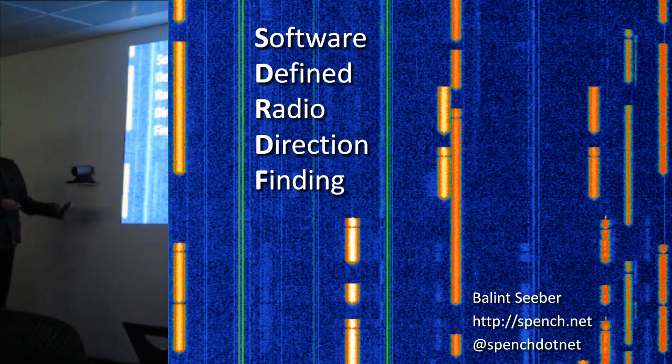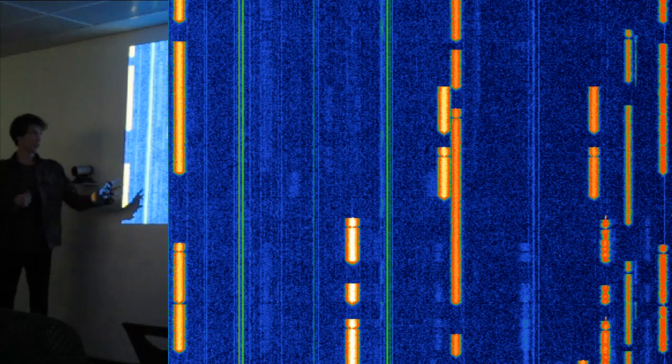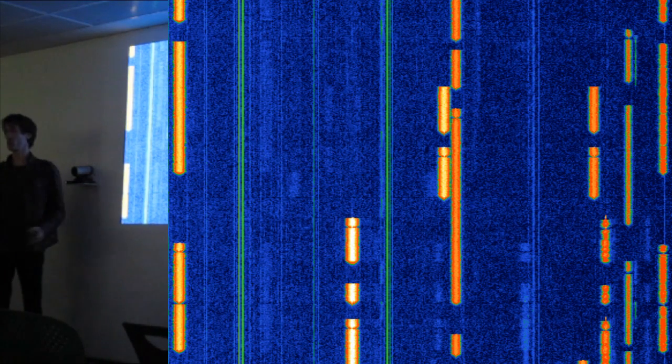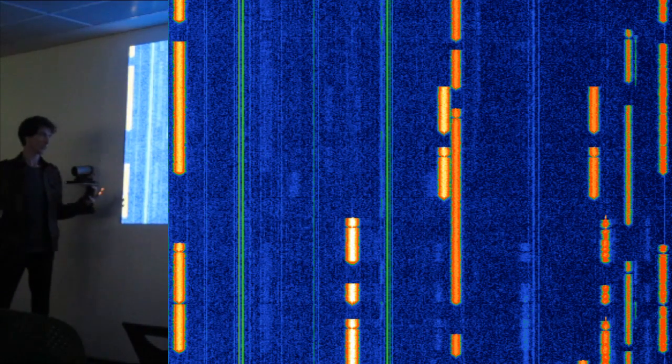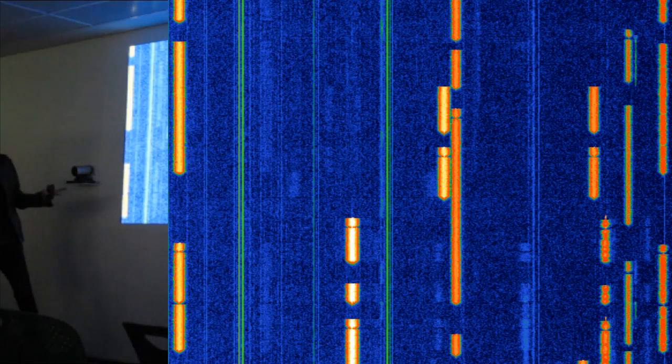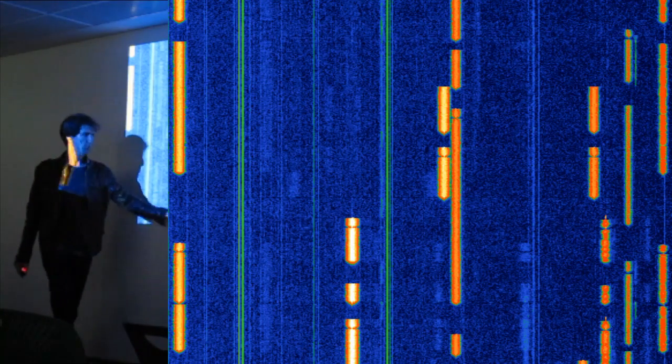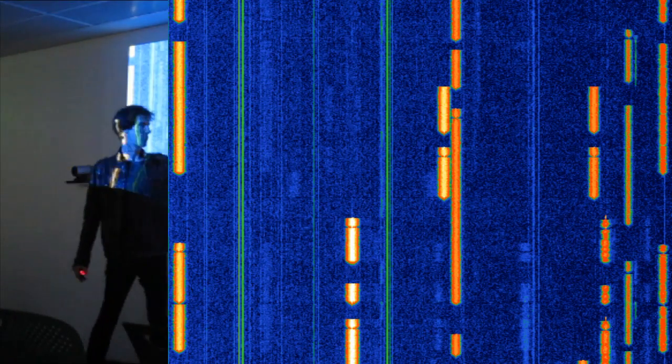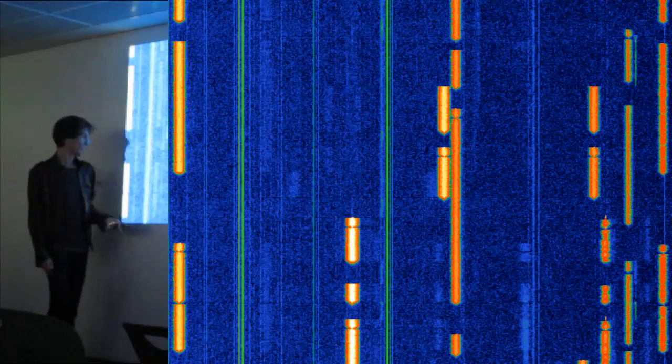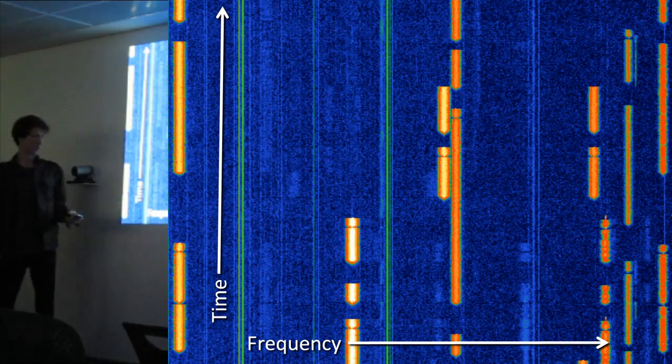I'll start out with the background here. This is actually the frequency spectrum of a certain portion of the radio frequency band. These are narrow band transmissions that are occurring on different frequencies. This is time going vertically and frequency going across.